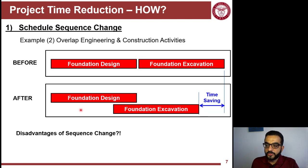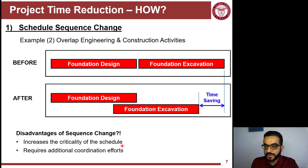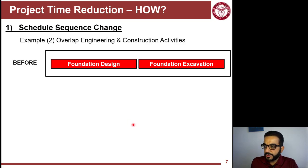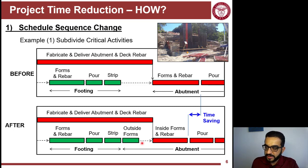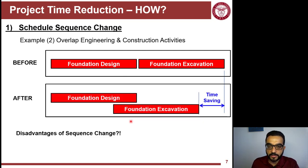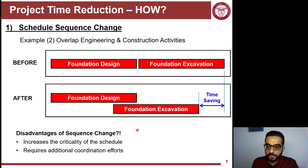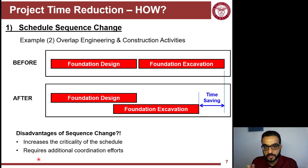One possible drawback is that it increases the criticality of the project. Those activities had more float before acceleration, but now they have reduced float. Reducing float translates into increasing criticality — a one-day delay becomes a much bigger deal proportionally. You increase criticality by doing things in parallel. Another drawback is it requires additional coordination because you need to stay on top of parallel activities, which overloads your management team.